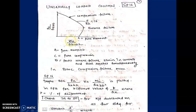There are various charts plotted between Pu/(fck·B·D) and Mu/(fck·B·D²) in SP16 for different values of p/fck. From chart 39 to 50, the reinforcement is distributed on all four sides of the column evenly — we will always try to distribute evenly. We will refer the charts for distribution on all four sides.